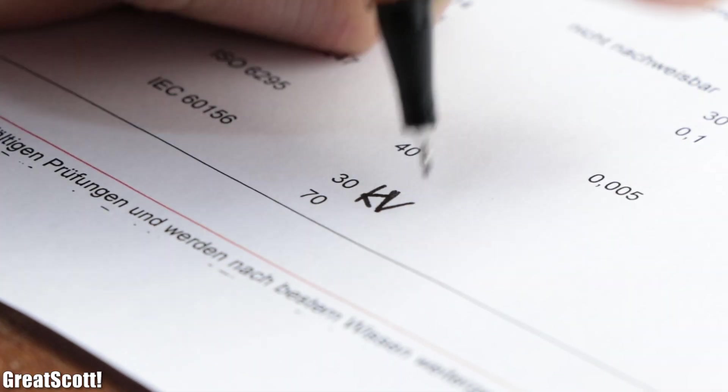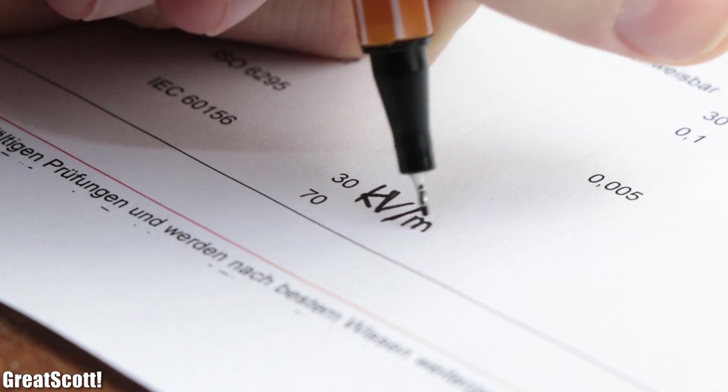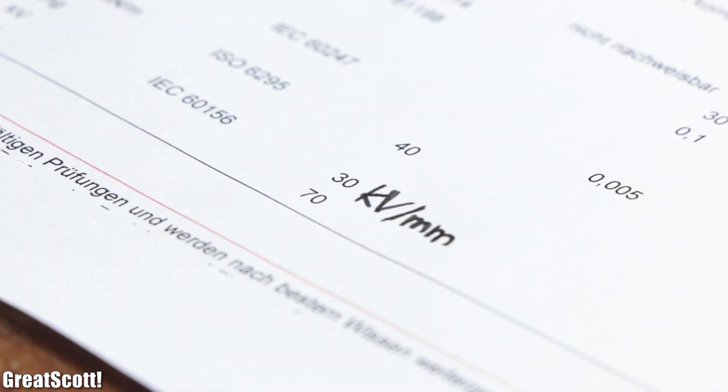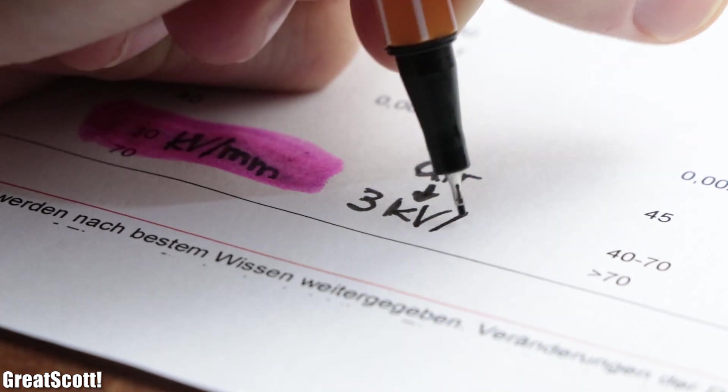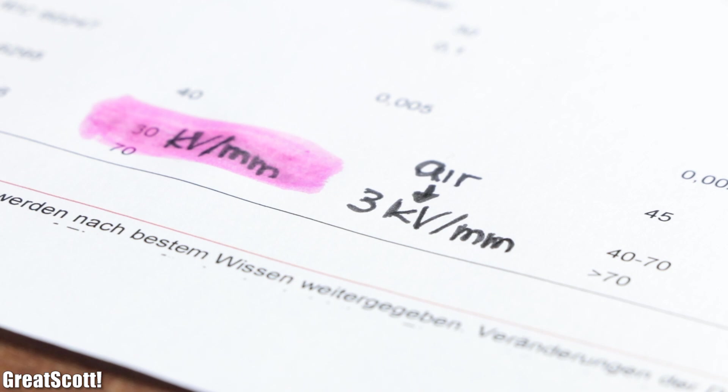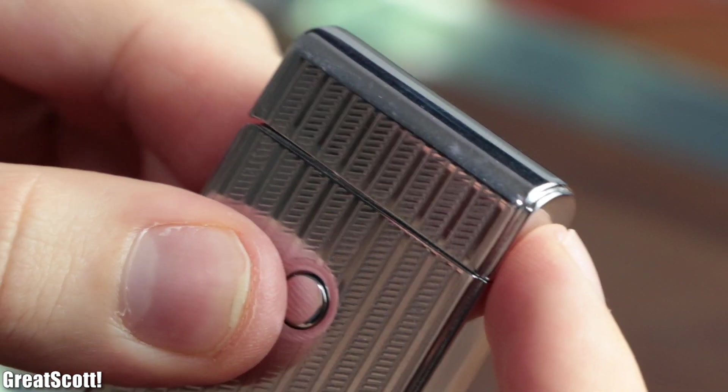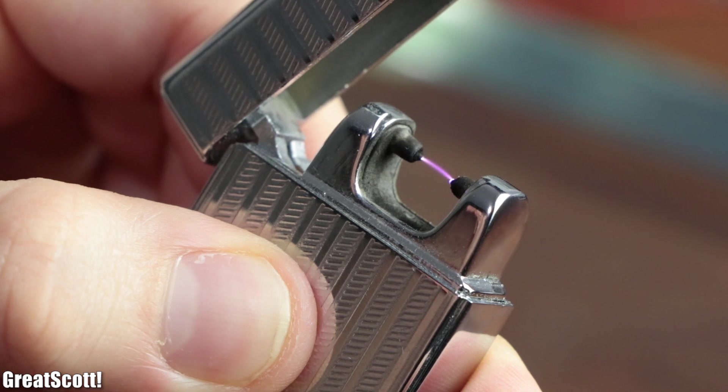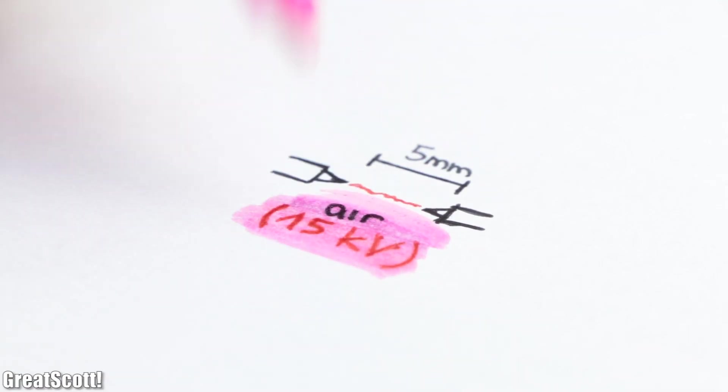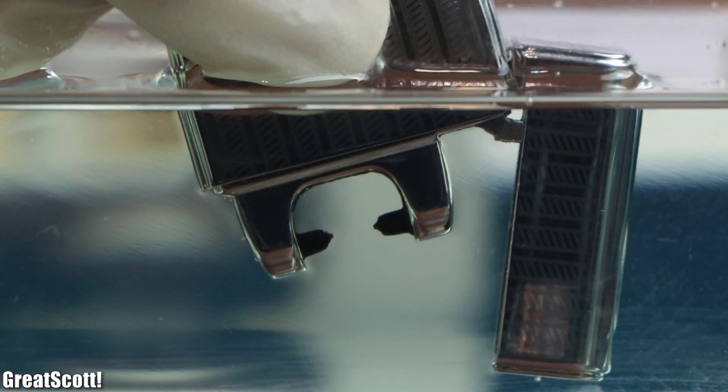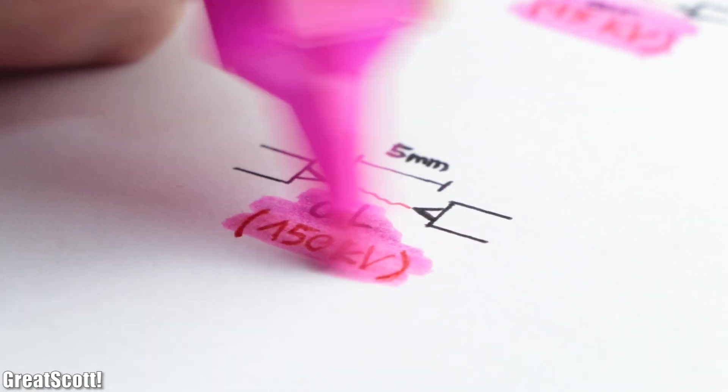But to be more scientific, the data sheet of the oil claims a dielectric strength of 30 kilovolts per millimeter. While, for example, dry air features a dielectric strength of 3 kilovolts per millimeter. So while my arc lighter here only requires around 15 kilovolts to jump its 5 millimeter gap in air, it would require around 150 kilovolts to create the same arc in oil.